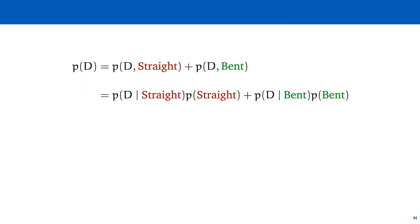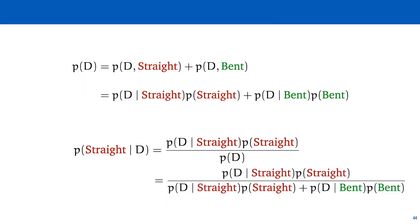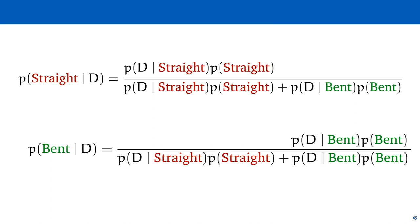And once we have these two terms, we can write Bayes' rule as a simple proportion of each term to the total. The probability of the straight model being used is the proportion of that term to the total, and the probability of the bent model being used is the proportion of that term to the total.